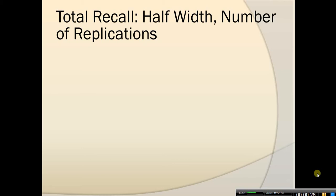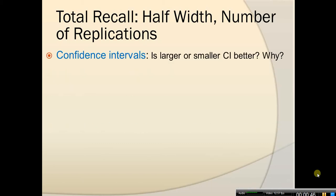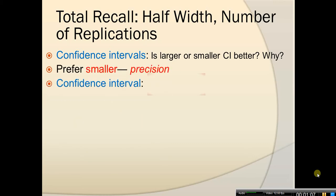Let's recall what we did in Lecture 18. We learned more about half-width and confidence interval, and also the desired number of replications to get a small half-width, which results in better, higher precision. So again, is a larger or smaller confidence interval better? Of course, a smaller confidence interval is better because there we have more precision about the output.